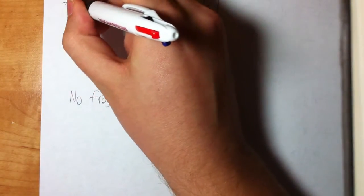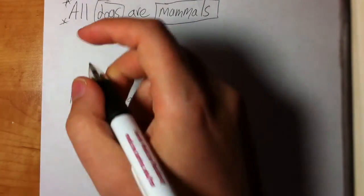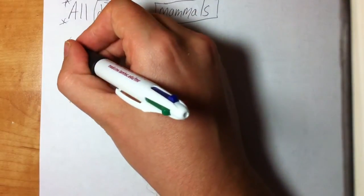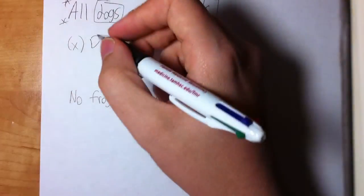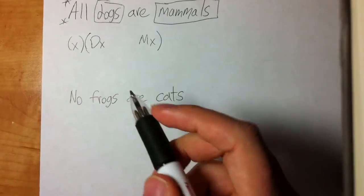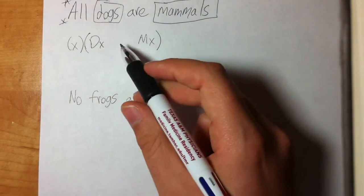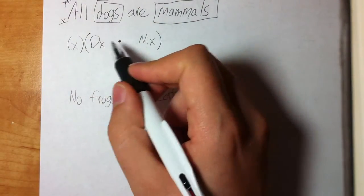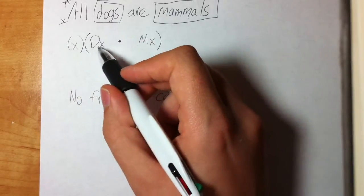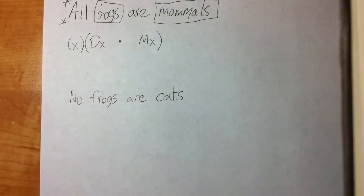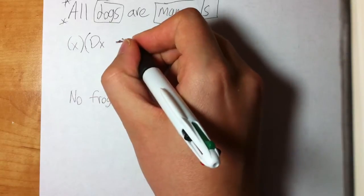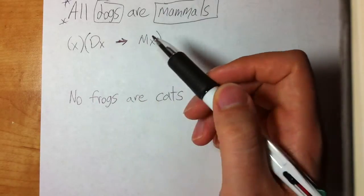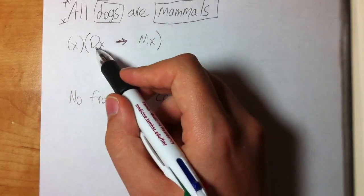I recognize I need to use the universal quantifier for 'all dogs are mammals,' so I'll write Dx for dog and Mx for mammal. I know I'm going to use the universal quantifier. A lot of people want to put a dot — Dx · Mx — but what does that actually say? 'Everything is a dog and everything is a mammal.' That's not what we want. The correct answer is the arrow: if x is a dog, then x is a mammal. A tip: universal quantifier equals arrow.